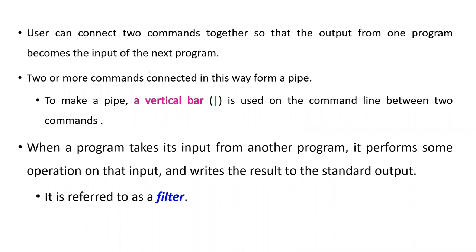Users can connect two Linux commands together so that the output from one program becomes the input of the next program. Two or more commands connected this way need a concept called pipe. When a program takes its input from another program, it performs some operation on that input and writes the result to the standard output. That is called a filter. So in this class, we're going to discuss in detail about pipes and filters.